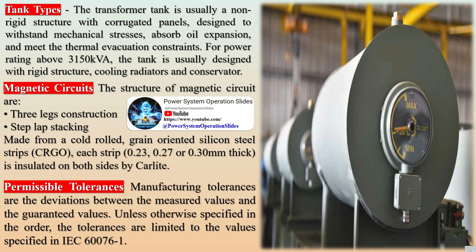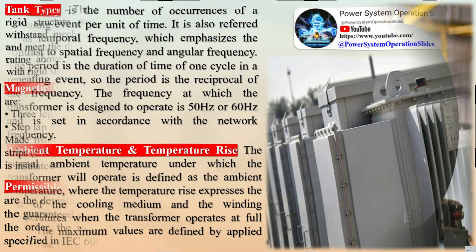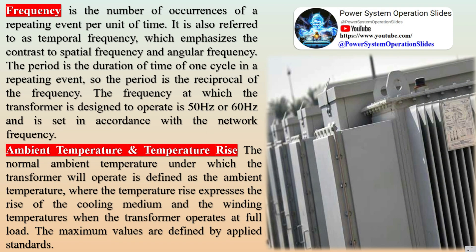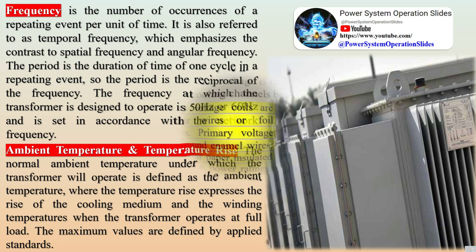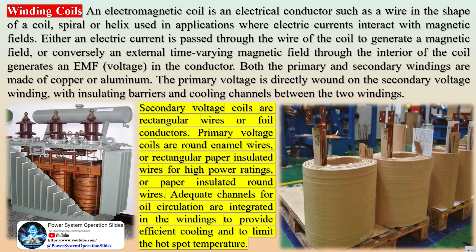IEC 60076-1 General. IEC 60076-2 Temperature Rise for Liquid Immersed Transformers. IEC 60076-3 Insulation Levels, Dielectric Tests, and External Clearances in Air. IEC 60076-5 Ability to Withstand Short Circuit. IEC 60076-14 Liquid Immersed Power Transformers Using High Temperature Insulation Materials. IEC 60296 In-Use Mineral Insulating Oils for Transformers and Switchgear.